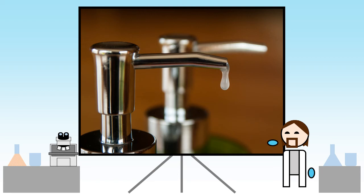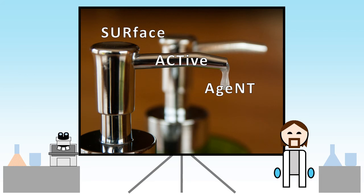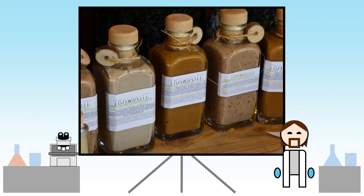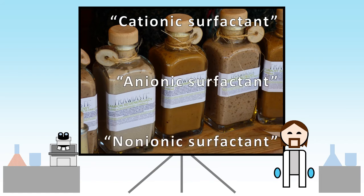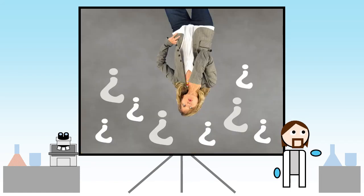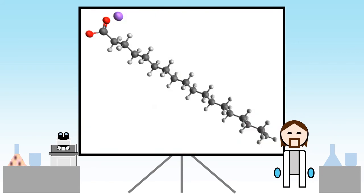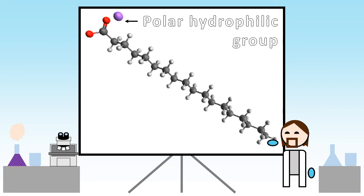Surfactant is short for surface active agent—it's a fancy word for soap. If you regularly read labels on things, you may have spotted phrases like 'anionic' or 'non-ionic surfactant.' But what does that really mean?